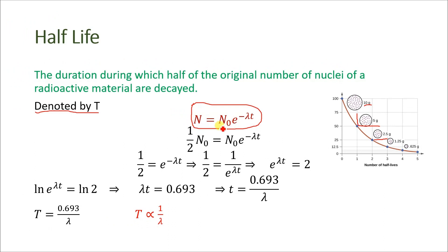Here is the form of the radioactive decay law: N₀ represents the initial number of nuclei present in the radioactive material. E is the exponential form, lambda (λ) is the decay constant whose value depends on the nature of the material, and T represents time. From this chart we know that after every one half-life the number of nuclei reduces.